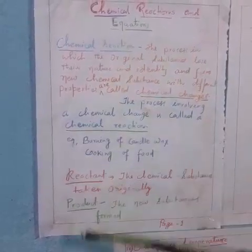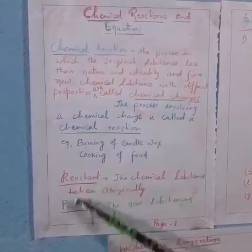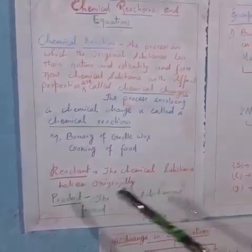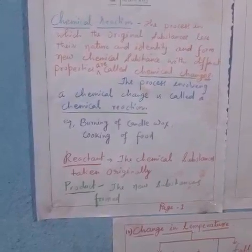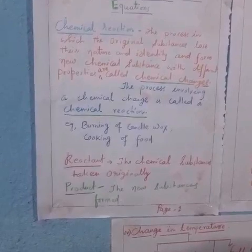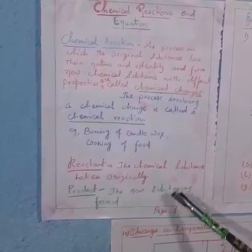In chemical reactions, there are different terms like reactant and product. As we know, the reactants are the chemical substances taken originally. The reactants are those chemical substances that combine together to give new substance that is product. While the product is the new substances formed after chemical reaction.